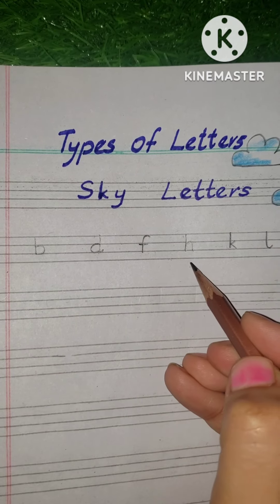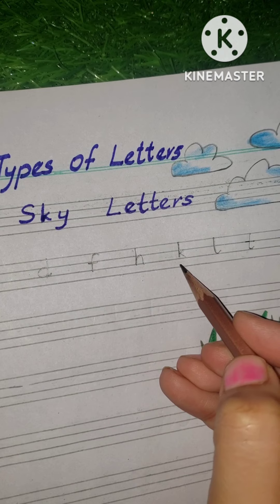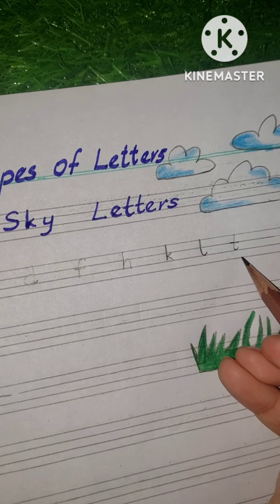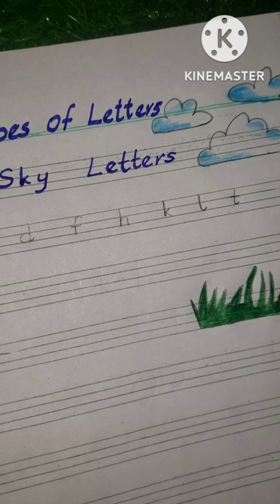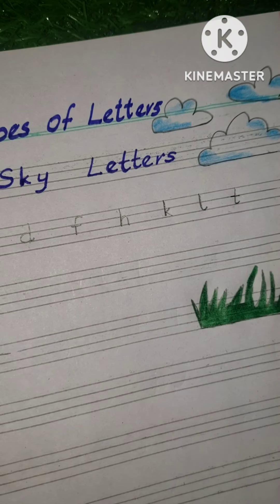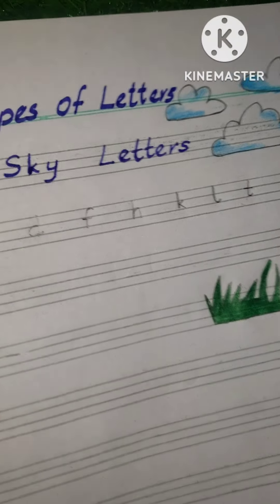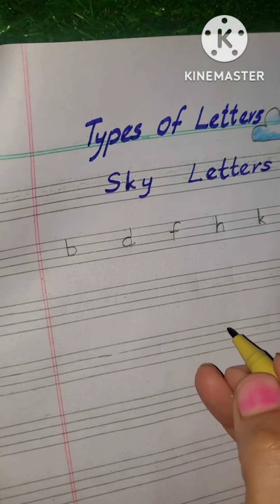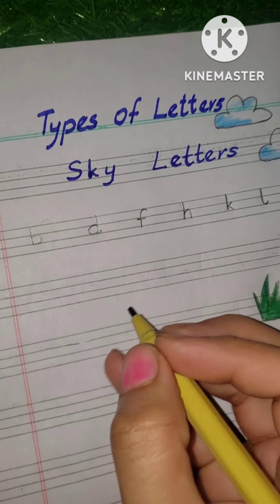Next letter is T. So these are all the sky letters: B, D, F, H, K, L, and T. Next, the second type of letters is grass letters.